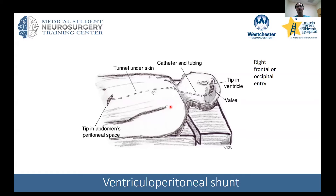In older kids the shunt can be placed into the pleural space — the space around the lungs — where fluid is absorbed by the chest wall. Another option is intracardiac placement, where the fluid drains directly into the bloodstream, very similar to placing a central line.